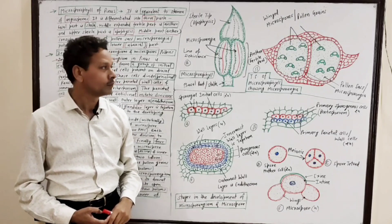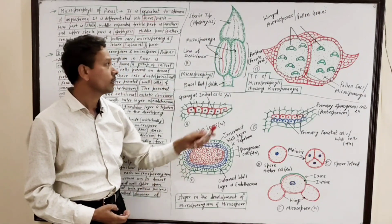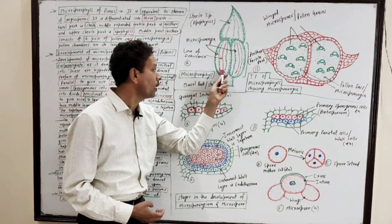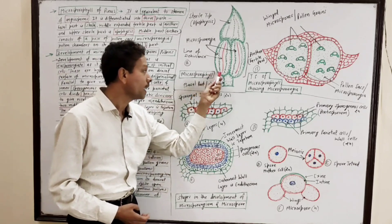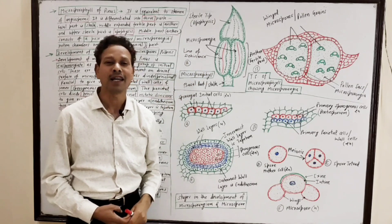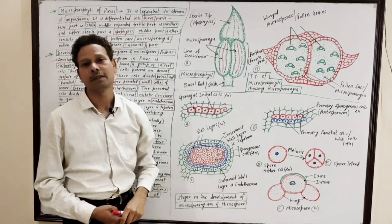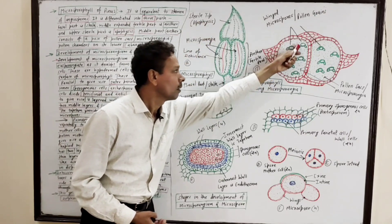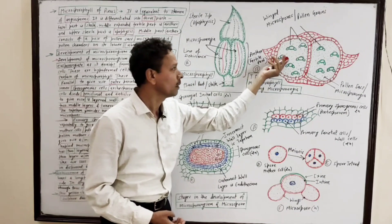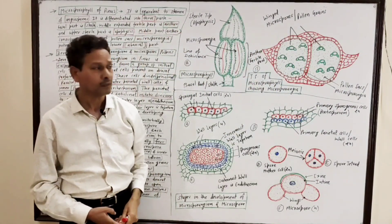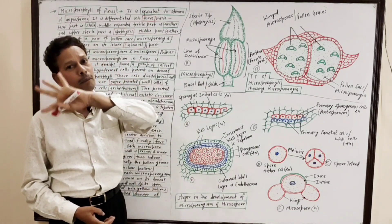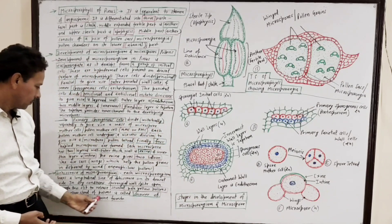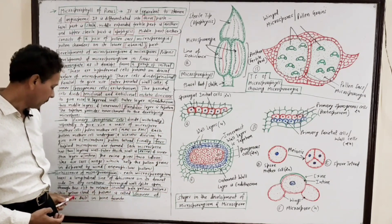Regarding dehiscence of microsporangium: the middle fertile part of microsporophyll consists of two microsporangia, and each microsporangium has a longitudinal line of dehiscence. When the conditions become dry, the sporangium wall splits along this line of dehiscence. As a result, the microsporangium wall splits and the pale yellowish colored pollens are released, dispersing several pollen grains or microspores in the air — this is called a shower of sulfur dust.